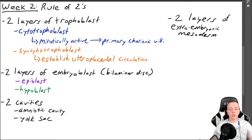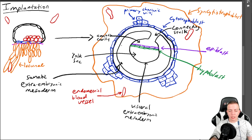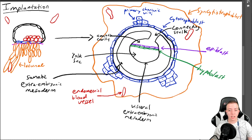Next are the two layers of extra-embryonic mesoderm. Shown in black in the picture, we have this bulb in the middle surrounded by another membrane connecting to the cytotrophoblast. We have the developing embryo connected by a connecting stalk, which is going to end up becoming the umbilical cord — this is how we get nutrients in and out from the embryo. It connects to the syncytiotrophoblast, which is receiving nutrients from the endometrial blood vessels.